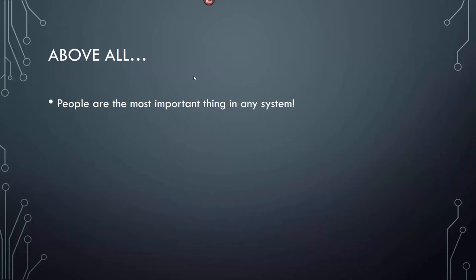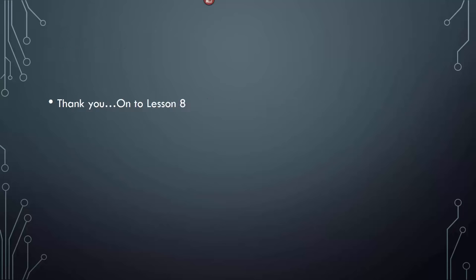Above all, people are the most important thing in any system. Any questions on the test that ask about levels of security or what to do first in a fire evacuation — people are the most important thing. If any of the choices are evacuate the people, inform the people, tell the people — anything like that — it's the right choice. That concludes Lesson 7.